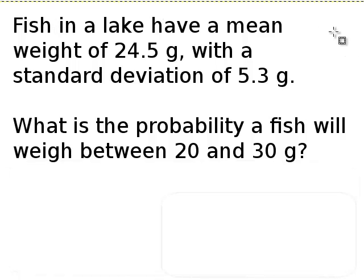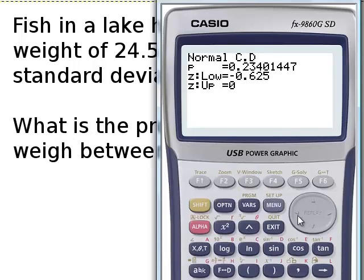So we have fish in our lake with a mean weight and a standard deviation. Really the context doesn't matter even the slightest bit. So we have: what is the probability a fish will weigh between 20 and 30 grams? So once again on the graphics calculator, exit back up.